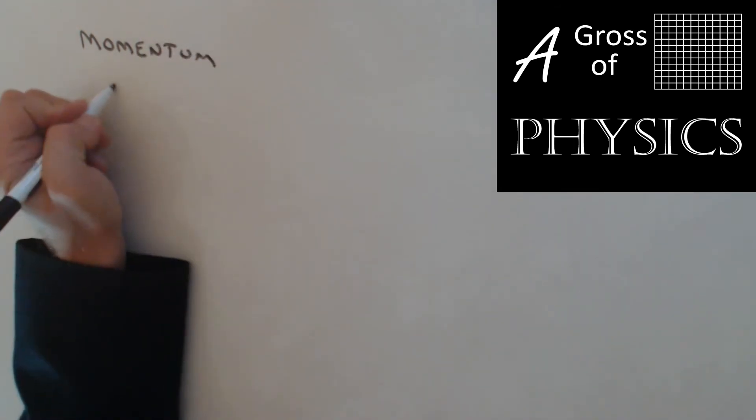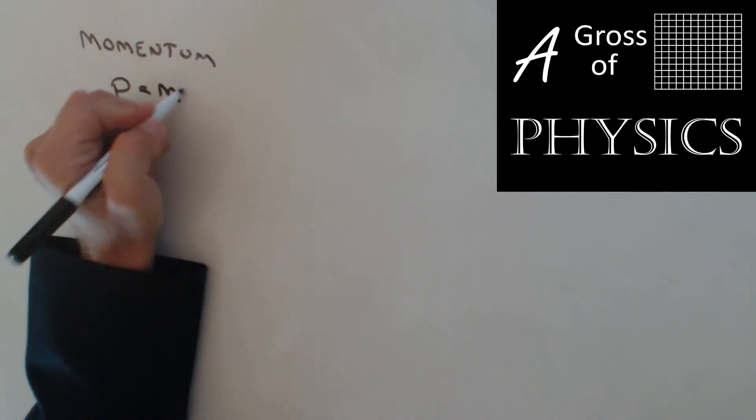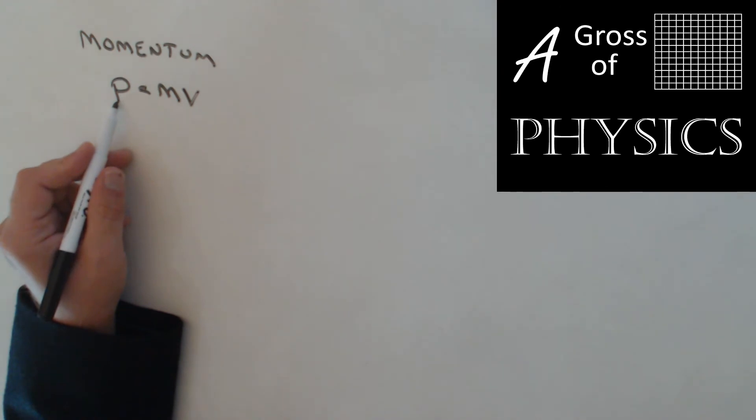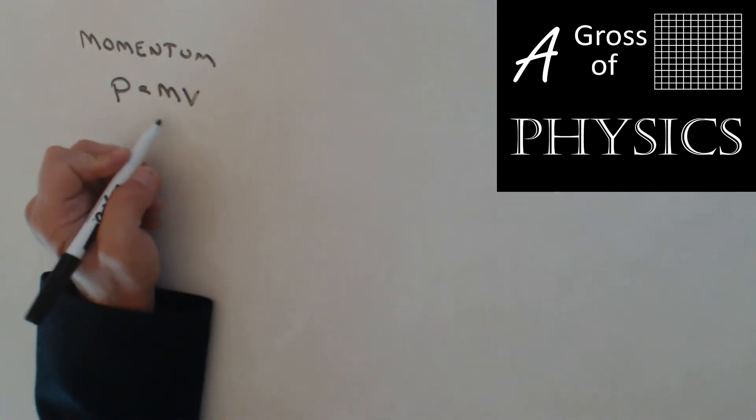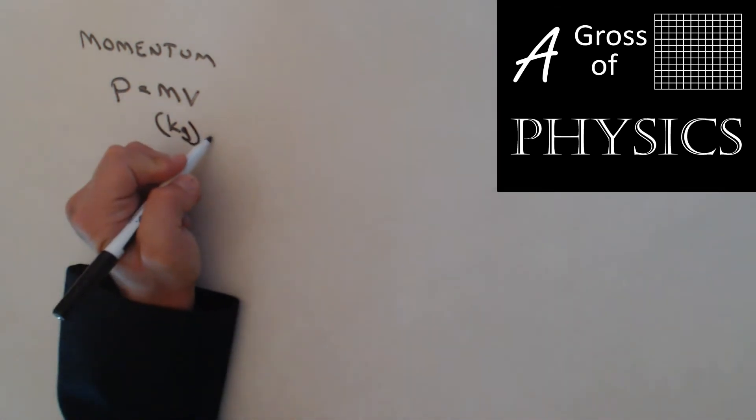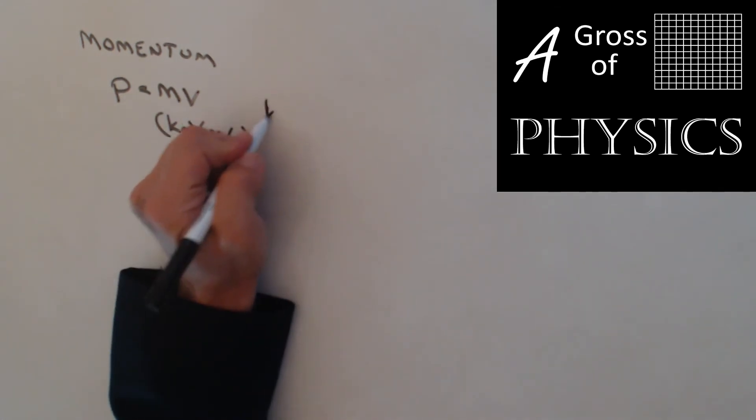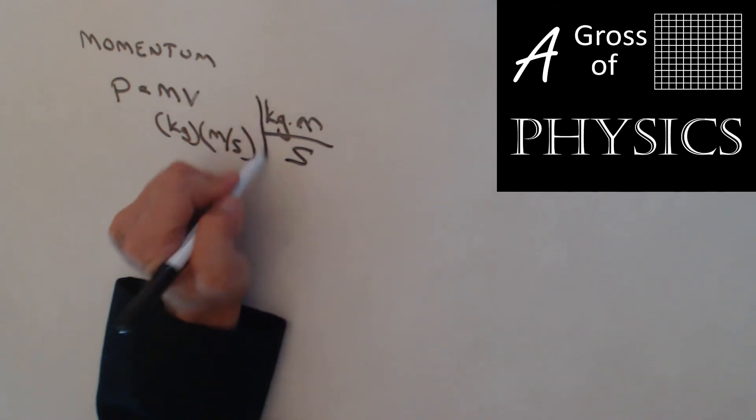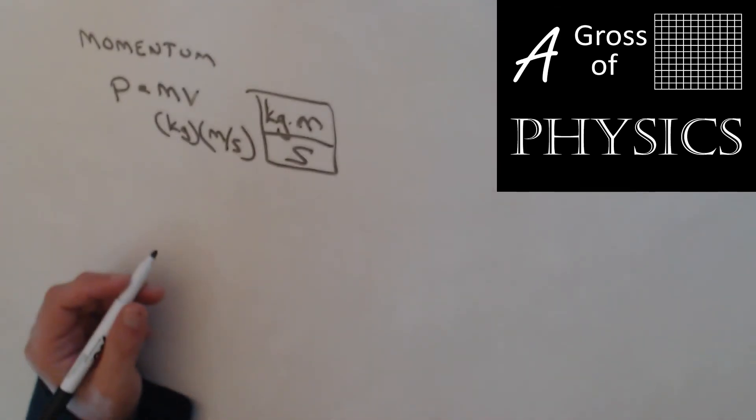Momentum is merely p equals mv. So the momentum, which is a lowercase p, is equal to the mass in kilograms and the velocity in meters per second, and that's going to yield kilograms times meter over seconds. And that does not have a simplified version. We're just going to use kilogram meter over second to represent the momentum.